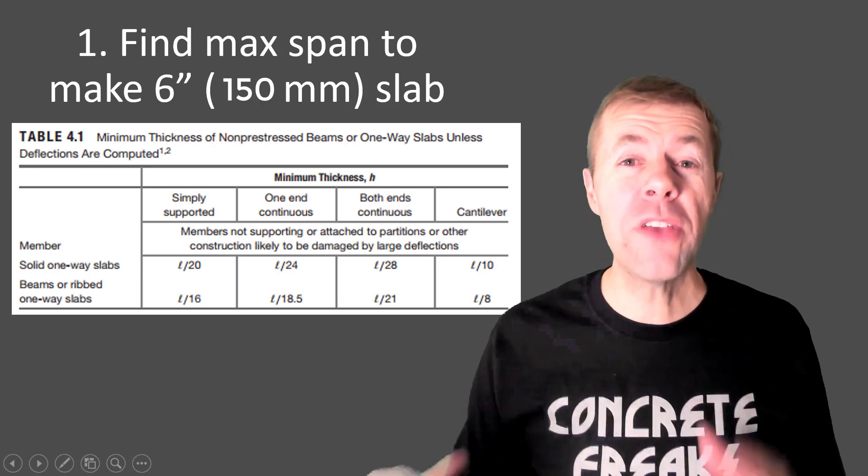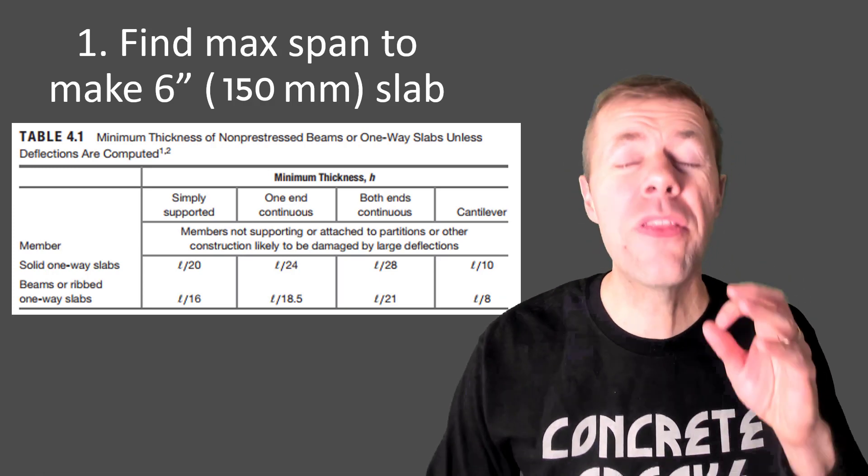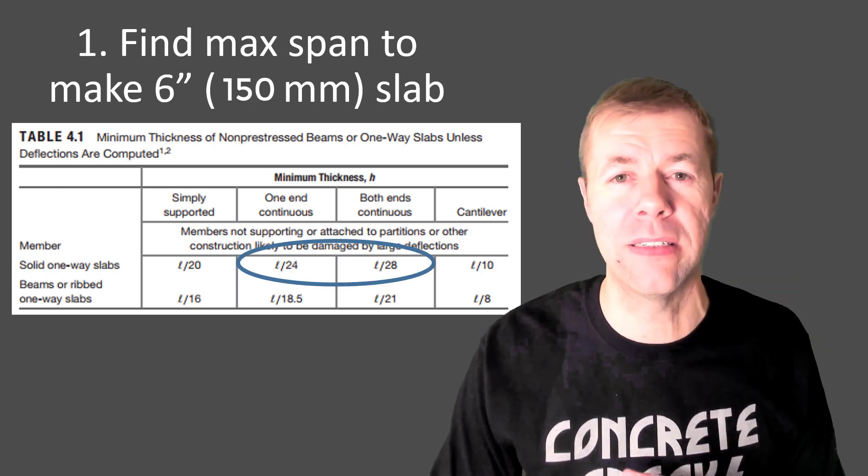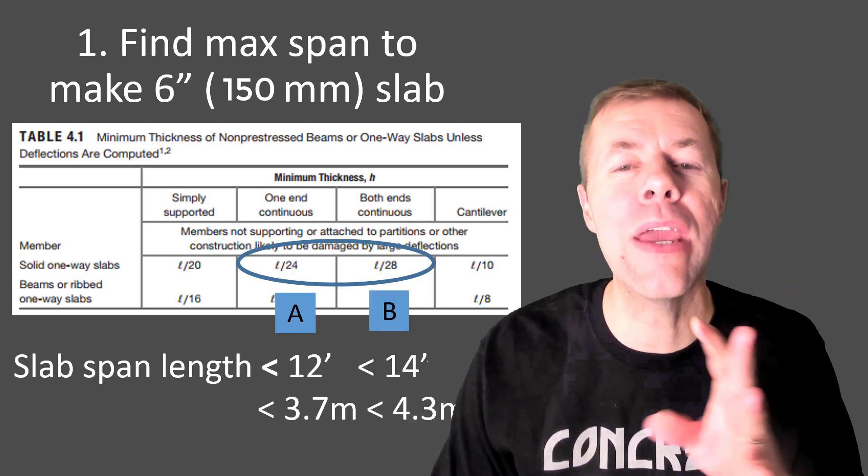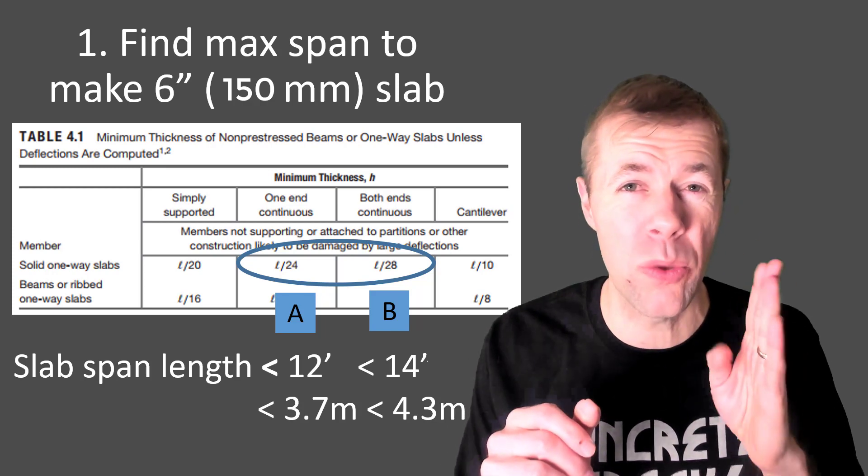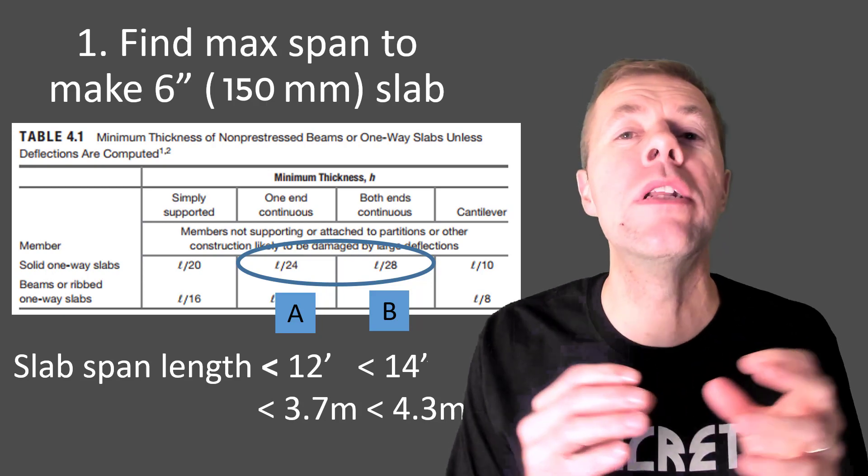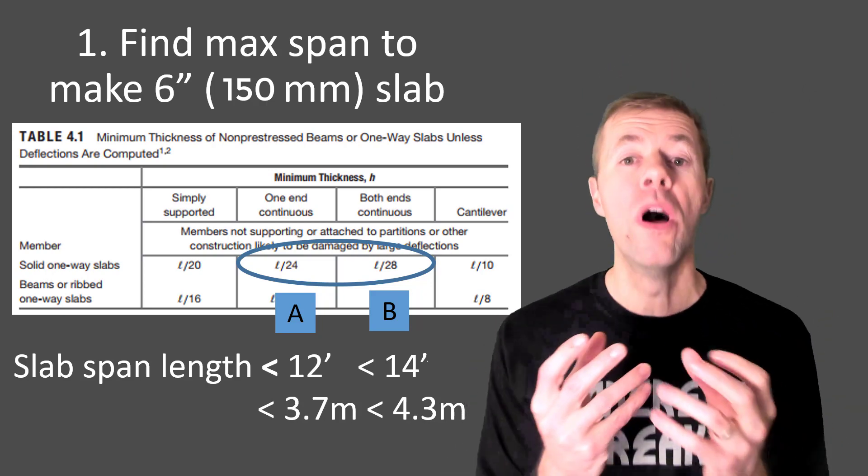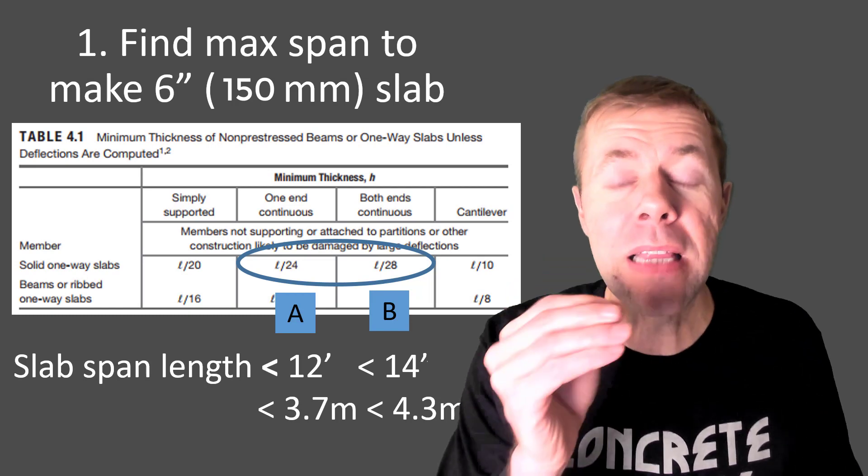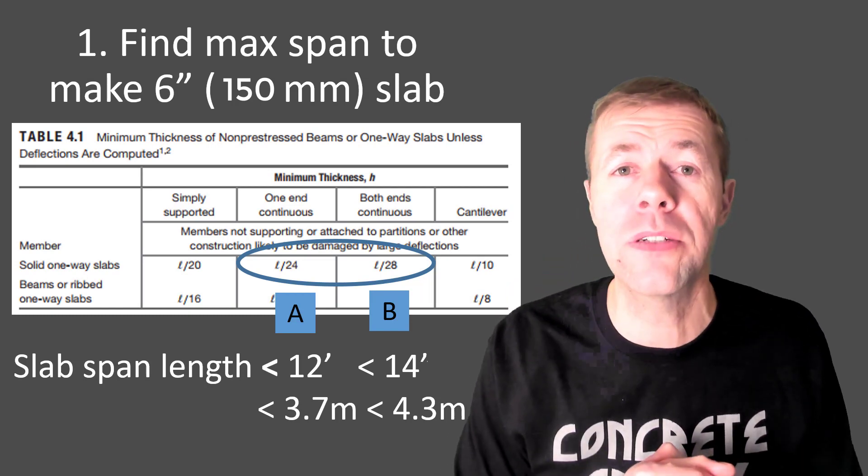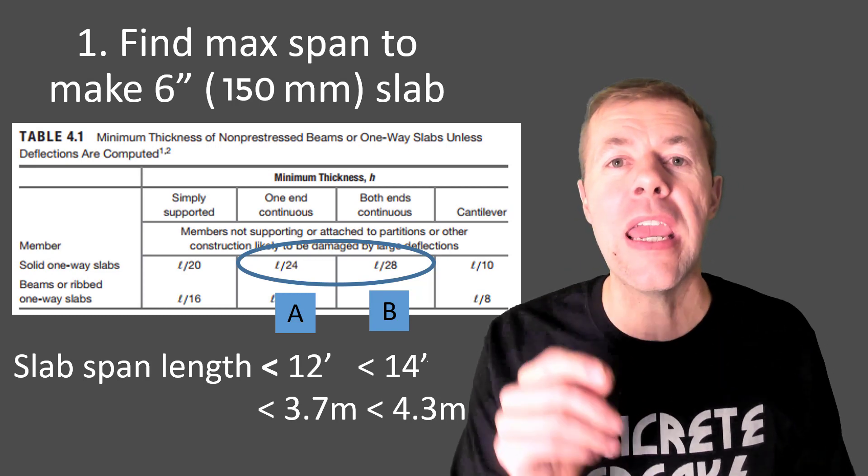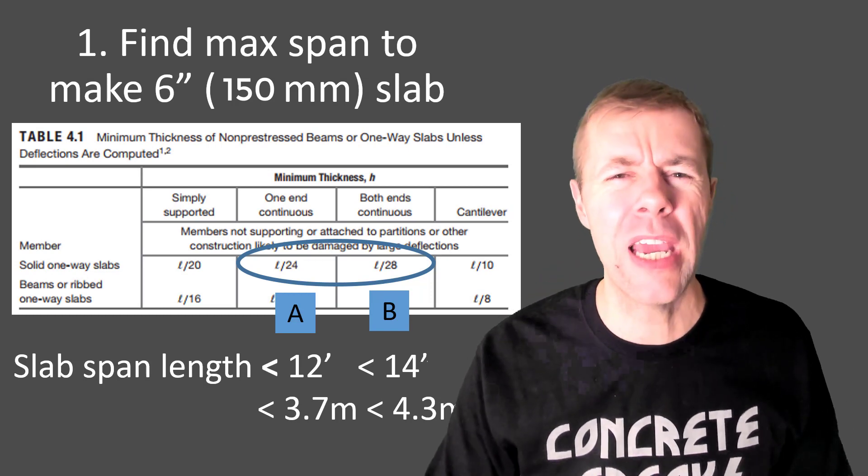So we have this sweet table from ACI 318 and the key parts for most structures are one of these two cases, either case A or case B. Case A is one end of the slab continuous and the other one not and the other one is when both are continuous. Now for a six inch slab, this means that my span length, if you do a little bit of algebra based on the equations here, can be either 12 feet for case A or 14 feet for case B.